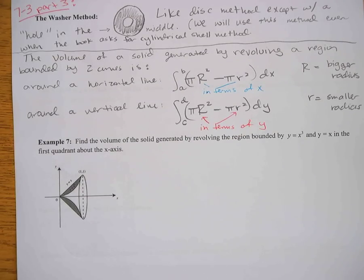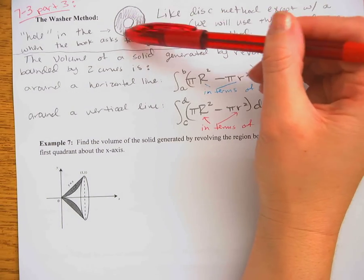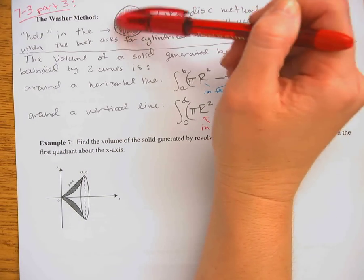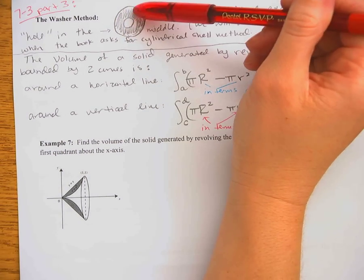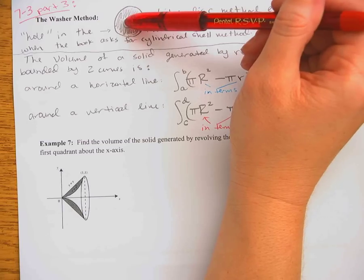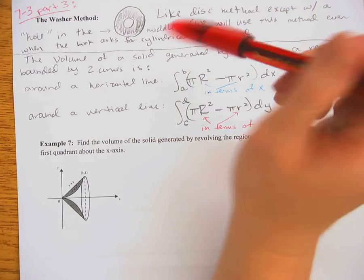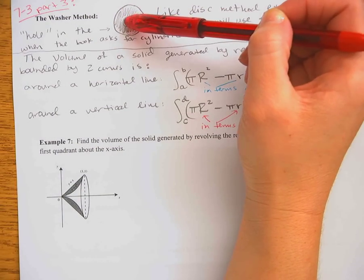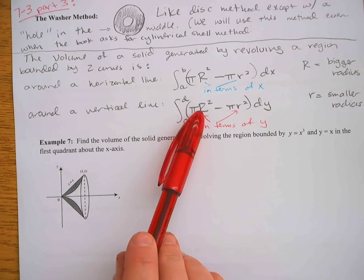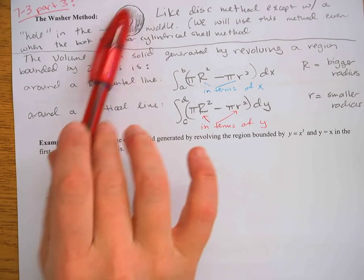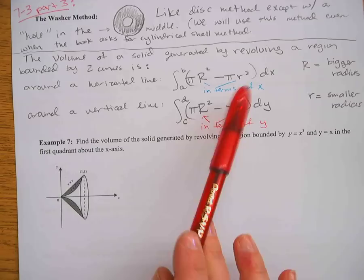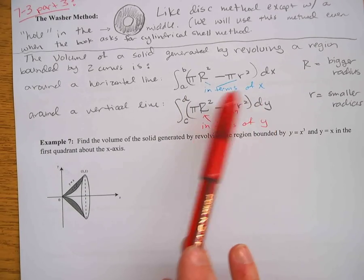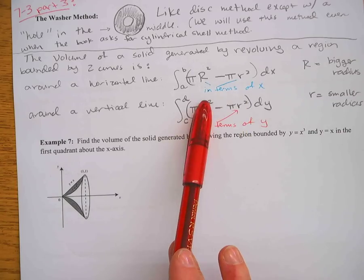Basically all it is is we're finding the area of these washers with the holes in the middle. The area is the area of the entire circle if it were filled in — pi times big R squared — and then we subtract out the area of the little circle, pi times little r squared. That gives us the leftovers in between. It's still like 7-3 part one where we're doing volume by cross section; these represent the areas of the cross sections.